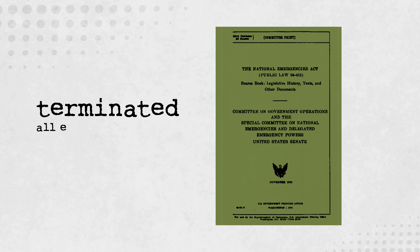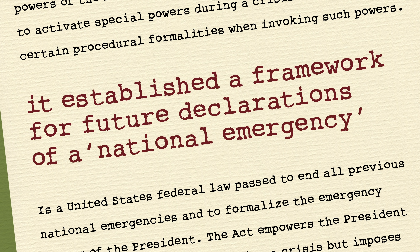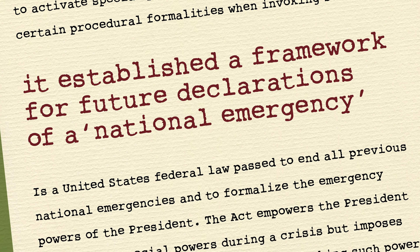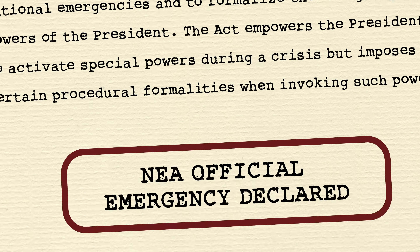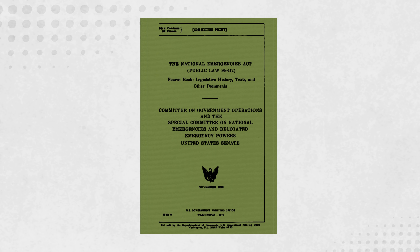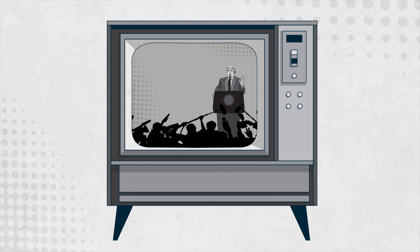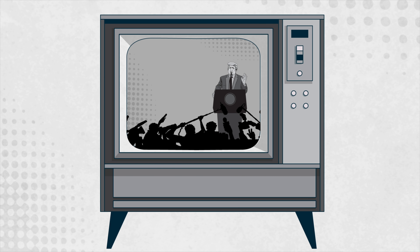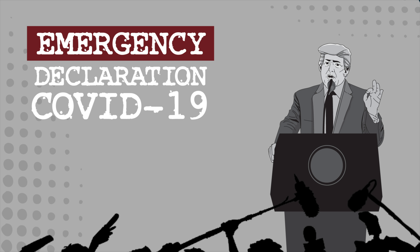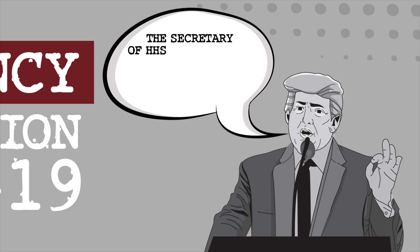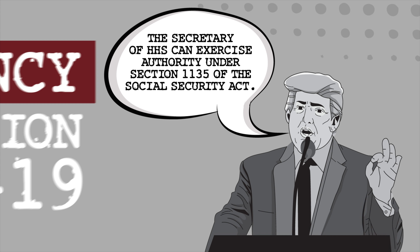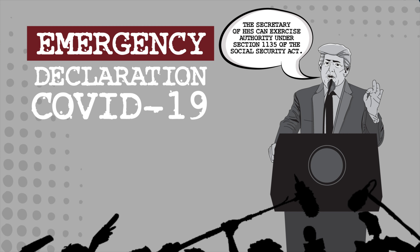The NEA terminated all of these existing emergency declarations. Additionally, it established a framework for future declarations of a national emergency and procedures the president must follow. The NEA dictated that emergency powers granted to the president could only be exercised after an official emergency declaration pursuant to the NEA. To declare a national emergency, the president must specify which statutory powers he or she intends to invoke. For example, when President Trump declared the COVID-19 emergency, he specified that the Secretary of HHS could exercise authority under Section 1135 of the Social Security Act to temporarily waive certain Medicaid and Medicare requirements.